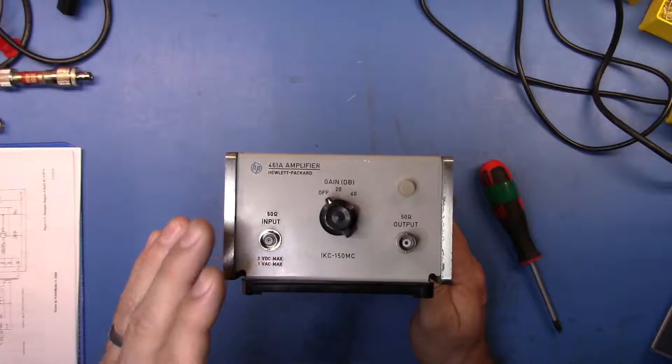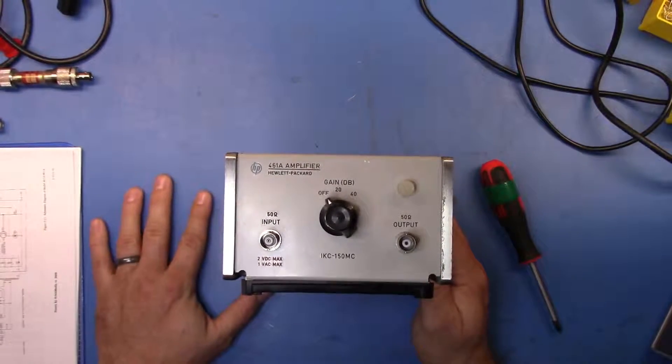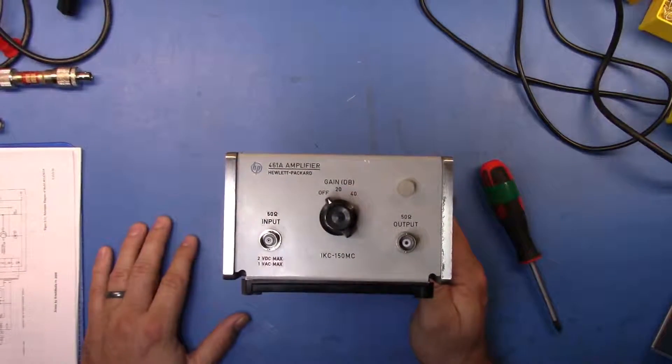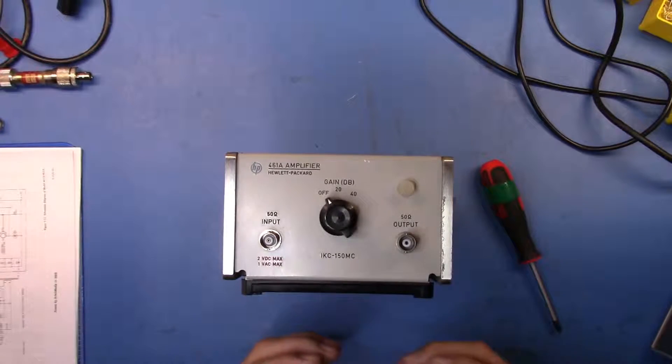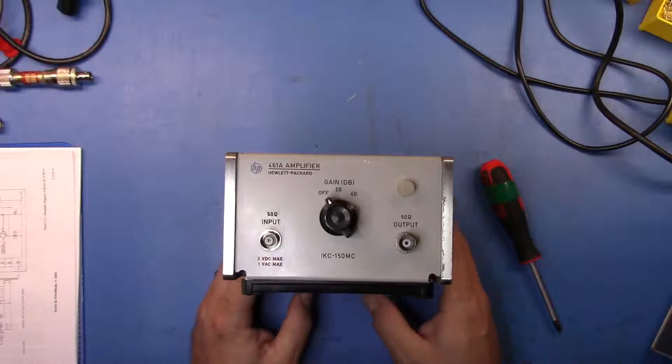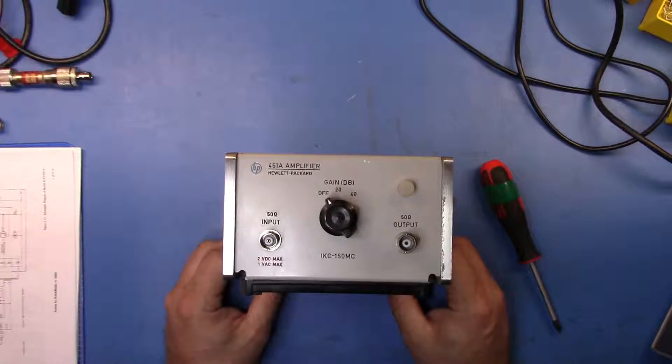So if you want to get a signal below, you know, 5 millivolts, you can feed it in here, set the gain for 40, and you'll get a distortion-free signal come out of the output here at 100 times the voltage, so it will be much easier for your test equipment to look at that signal.